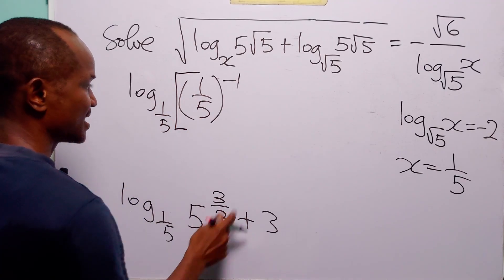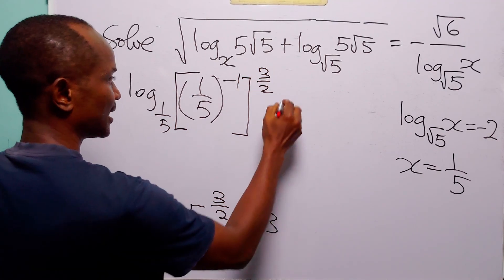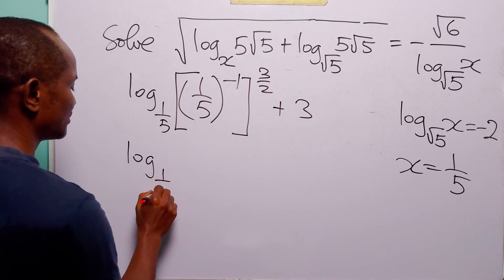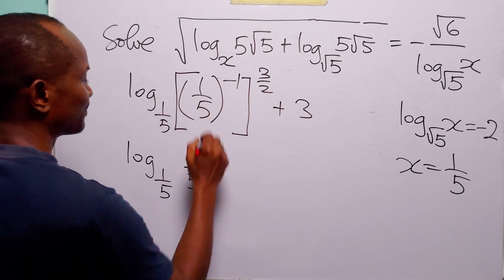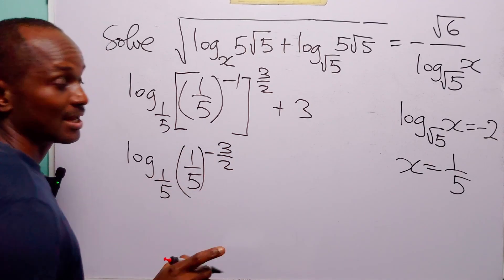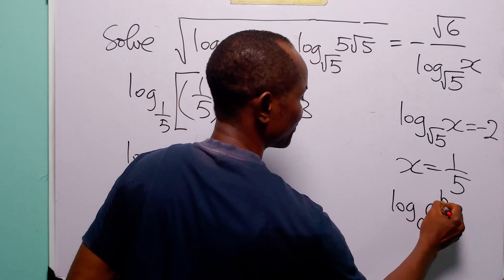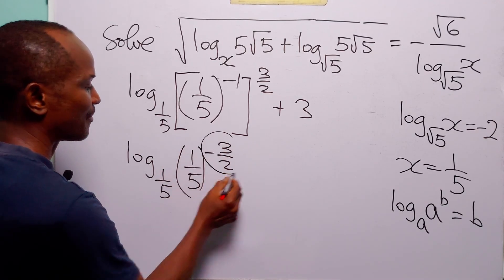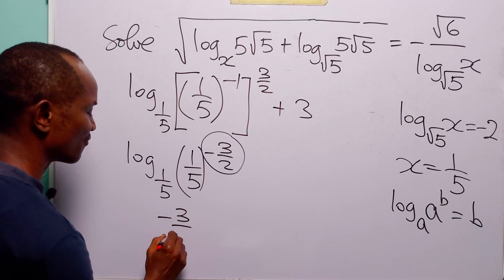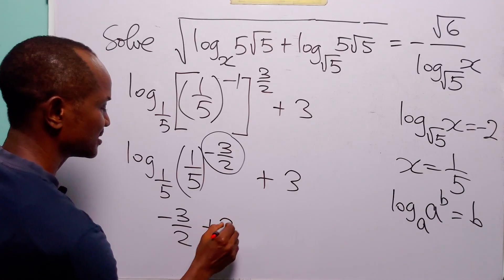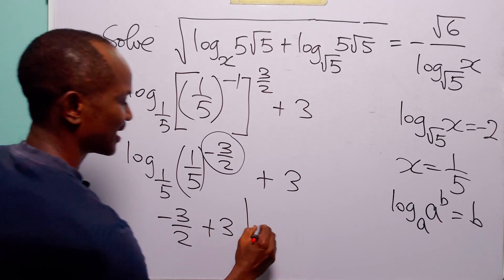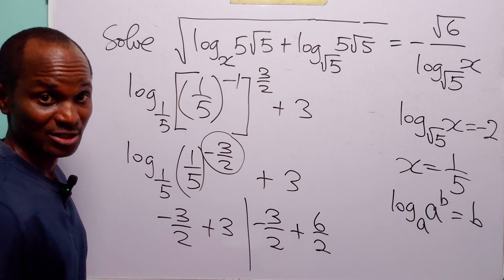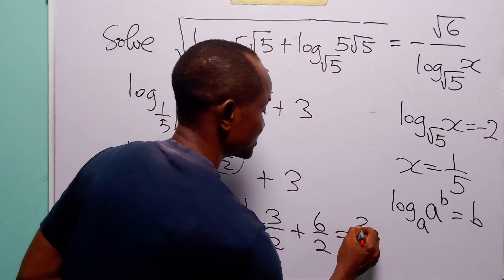Multiplying the two powers, we have log to base 1 over 5 of 1 over 5 to the power minus 3 over 2, plus 3. Recall that log to base a of a to the power b is equal to b. So log to base 1 over 5 of 1 over 5 to the power minus 3 over 2 is equal to minus 3 over 2. We still have plus 3, which we can write as 6 over 2. These two fractions have the same denominator, so this equals 6 minus 3 over 2, which is 3 over 2.